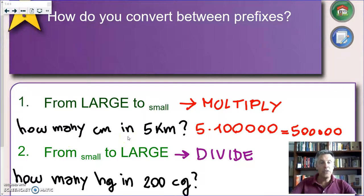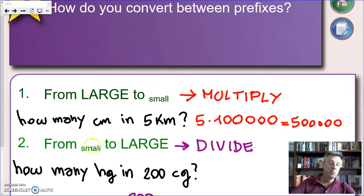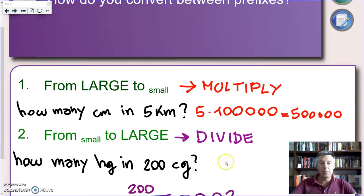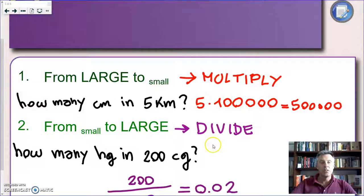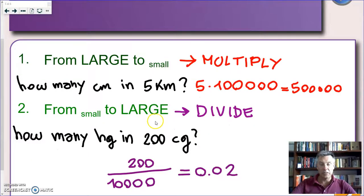On the other hand, if you want to go from a small unit to a large unit, of course, you have to divide, because once you group up small things to make a bigger one, you'll end up with less stuff. So, how many hectograms are in two hundred centigrams? Again, what you have to do, you have to count the steps, but this time you have to divide. So, let's do this thing together again.